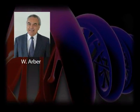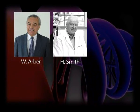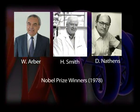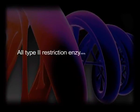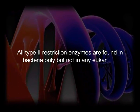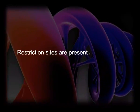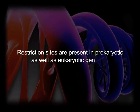The discovery and characterization of type II restriction endonucleases led to the award of the Nobel Prize to Arber, Hamilton Smith, and Daniel Nathans in 1978. The most important characteristics of type II restriction enzymes which make them suitable for gene cloning are: number one, all type II restriction enzymes are found in bacteria only, but not in any eukaryote. On the other hand, restriction sites are present in prokaryotic as well as eukaryotic genomes.